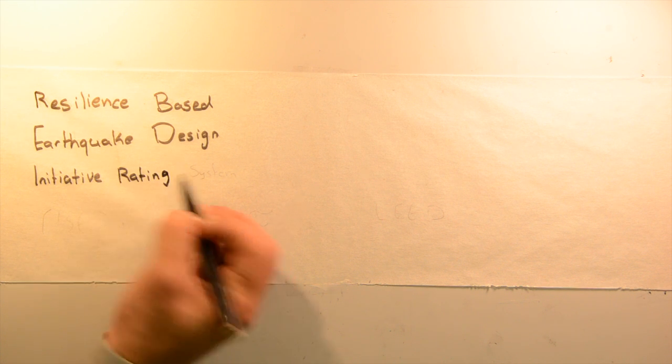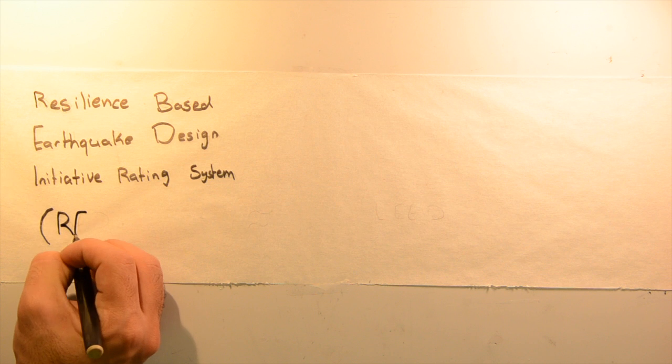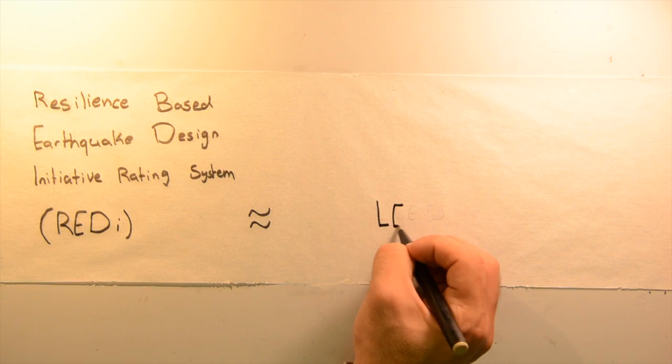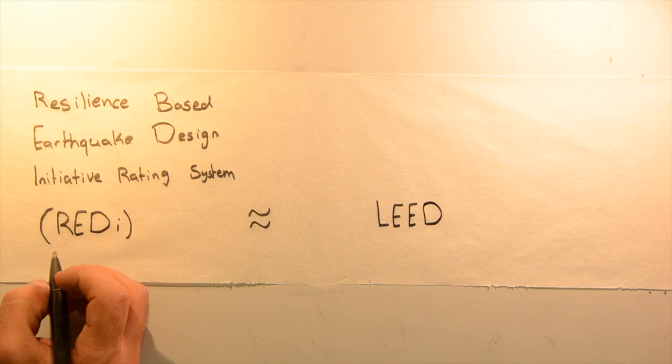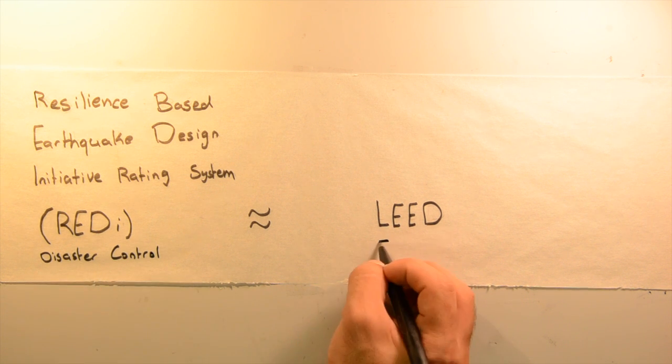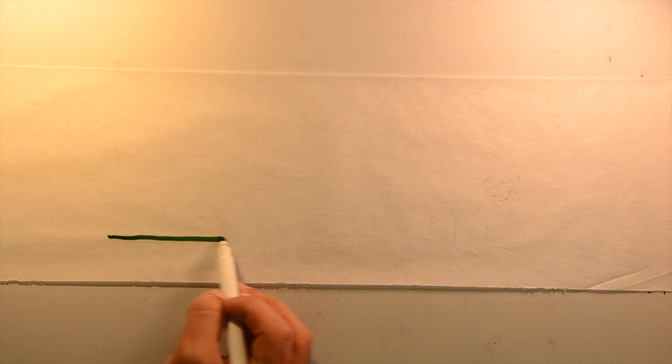This system provides a checklist for architects, engineers, and owners when designing buildings beyond life safety. The rating system sets specific criteria for designing new buildings to meet earthquake resiliency, in a manner similar to LEED rating system for sustainable design.